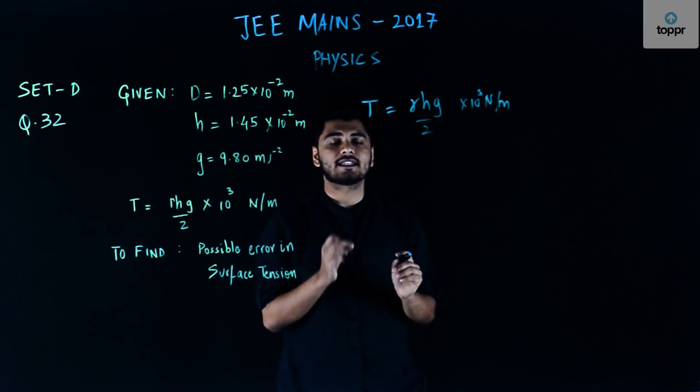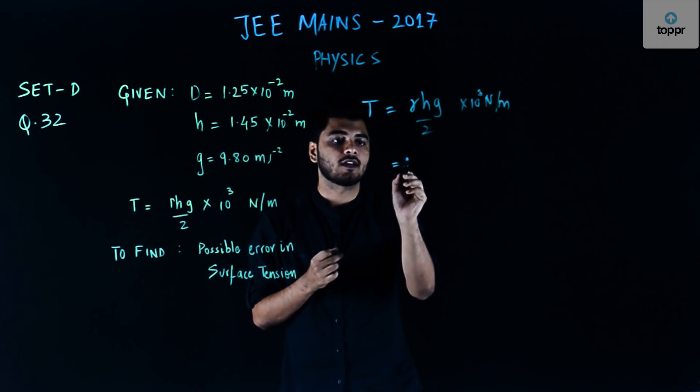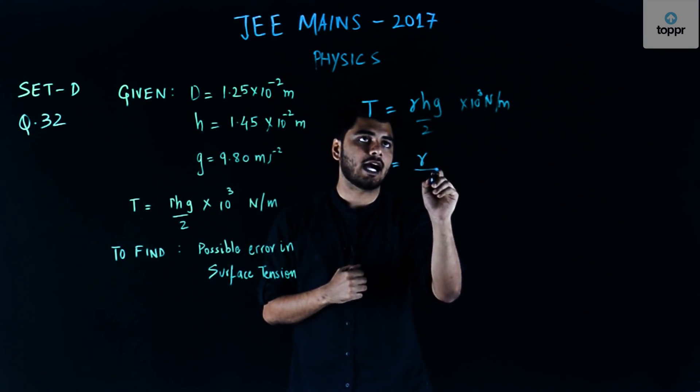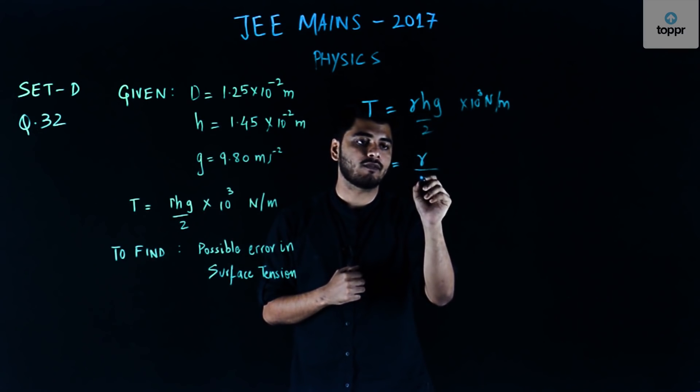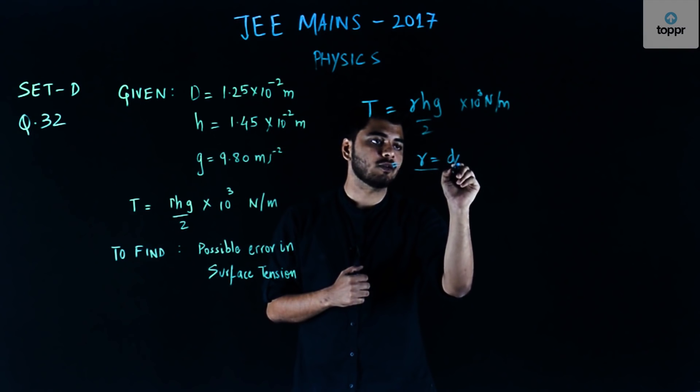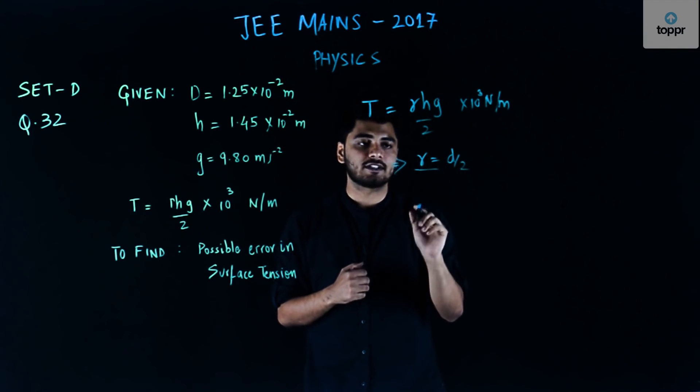Now I know that my R is the radius of the capillary and we have been given a diameter. So I'll just replace R by D by 2 because my radius is nothing but half of the diameter.